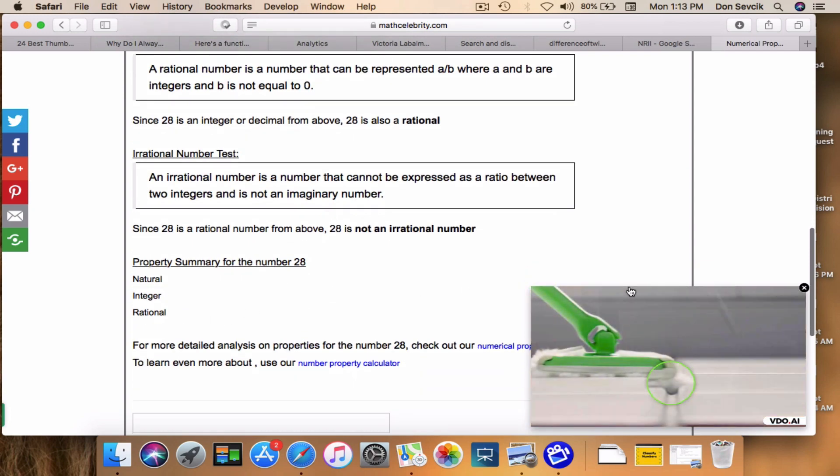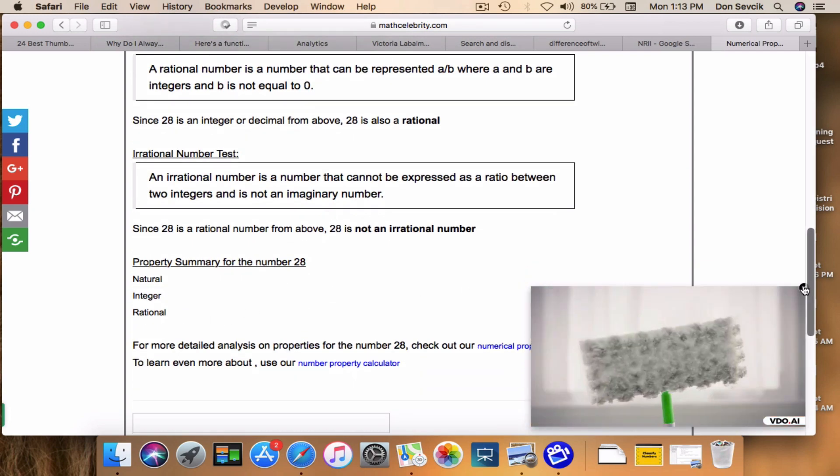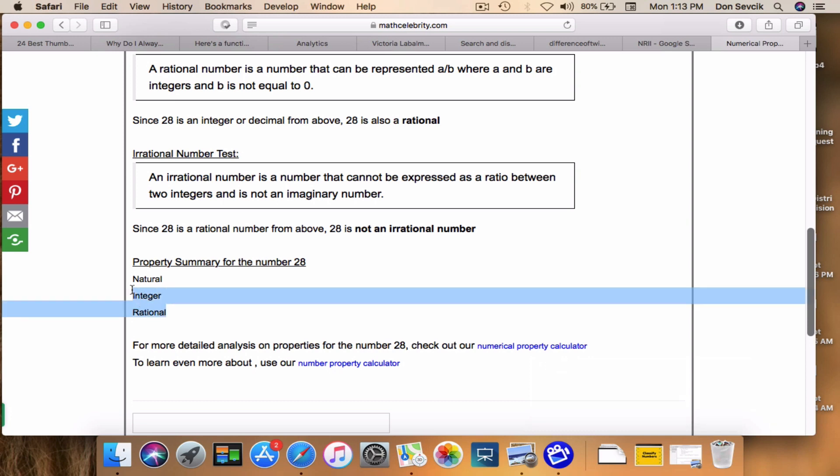When it's done it will list out for you every property that it meets. So if it doesn't meet a property, you won't see it here in the summary.